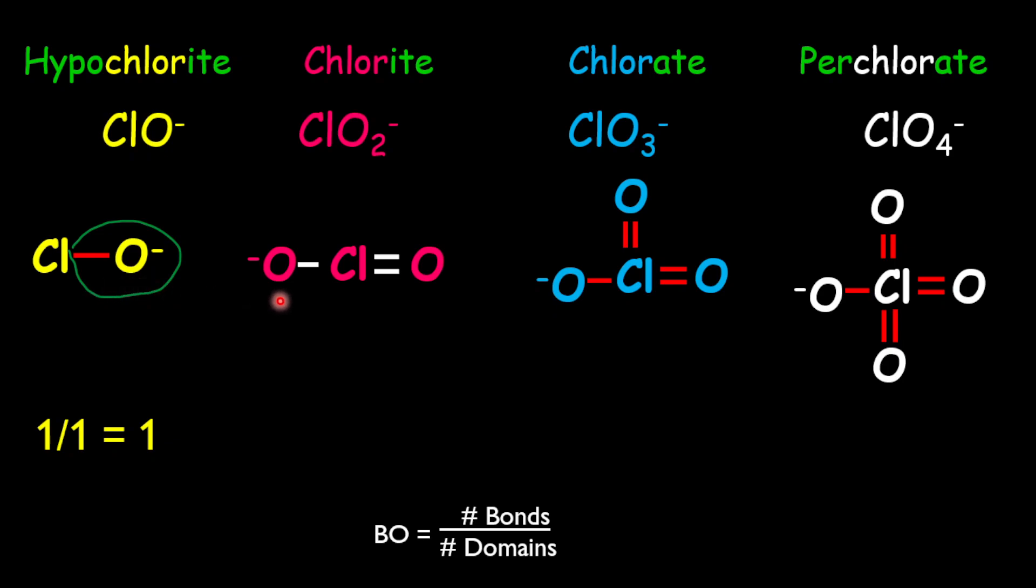In the second structure, you notice that there is a total of 3 bonds. So therefore, the bond order will be given as 3 divided by 2, which equals 1.5.